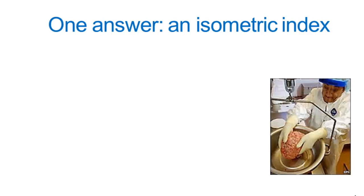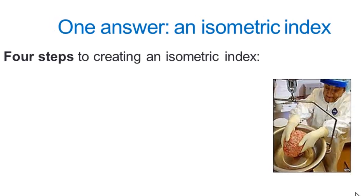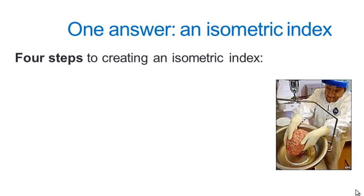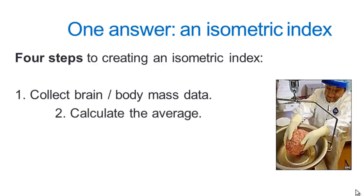So one way that we could try to answer this is by constructing an isometric index. And there's four steps to doing this. First we go out and we collect some brains from a sample of different mammals, for example. And we also get body mass data. So we can weigh brains and relate the weight of the brain to the body mass. Then we calculate the averages and we call the average 1.0.